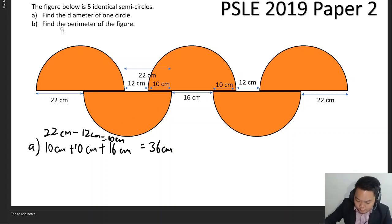The next part asks us to find the perimeter of the figure. This will be quite simple. The perimeter would be the length of all the outer boundaries.